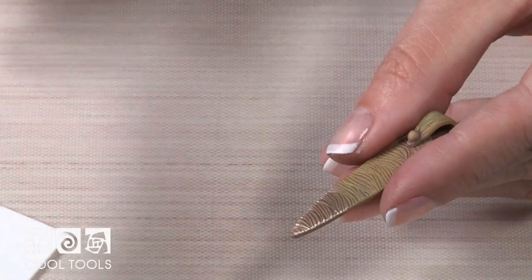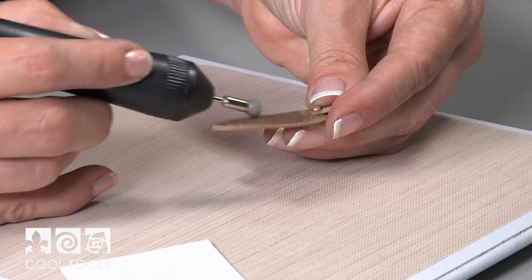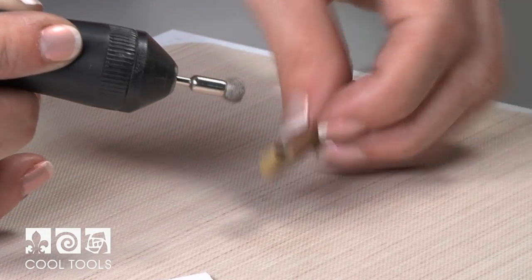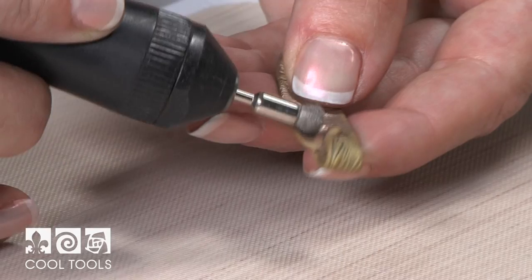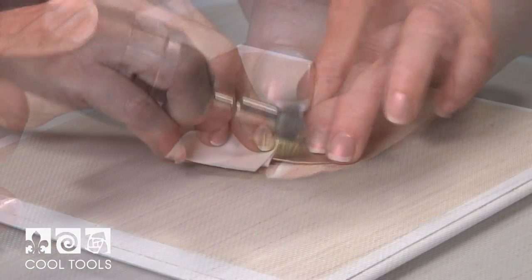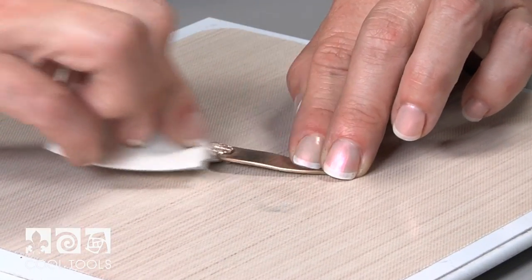To make the pendant look like new, brush it with a steel brush or use a Fordham with a steel brush attachment and polish with a polishing paper to remove any oxidation.